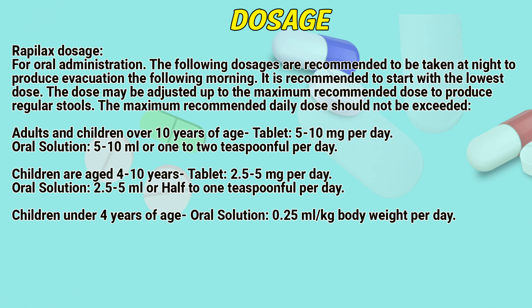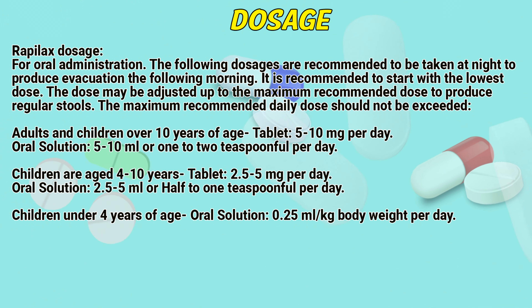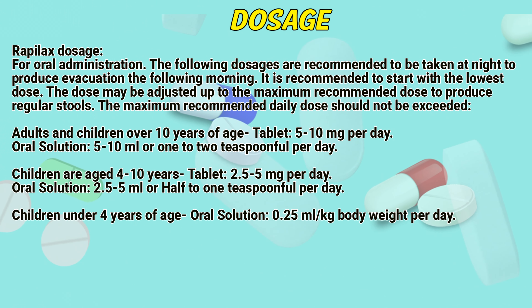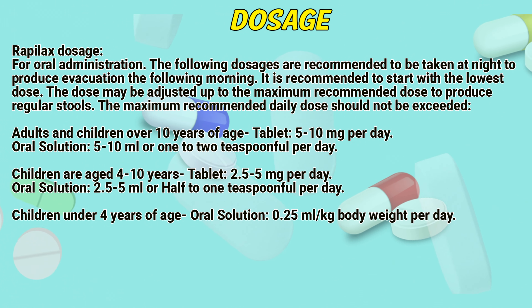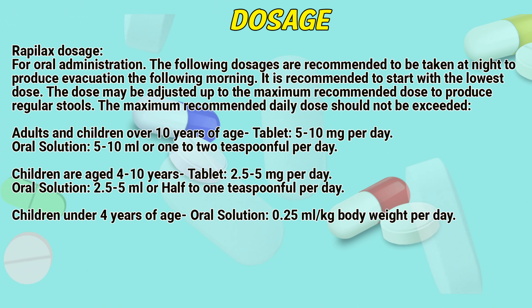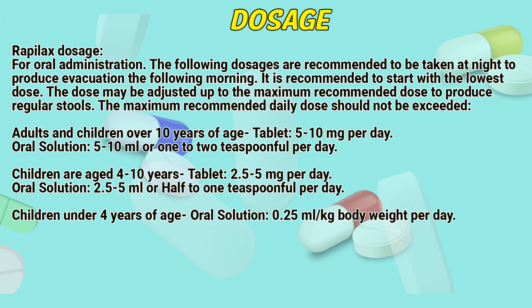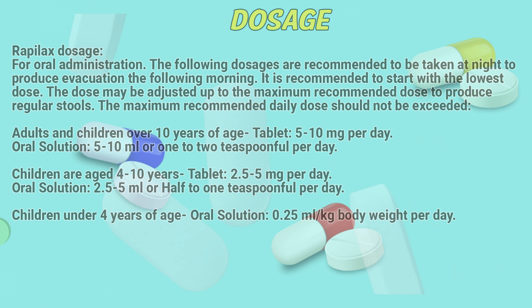Adults and children over 10 years of age: tablet 5–10 mg per day; oral solution 5–10 ml or 1–2 teaspoons per day. Children aged 4–10 years: tablet 2.5–5 mg per day; oral solution 2.5–5 ml or 0.5–1 teaspoon per day. Children under 4 years of age: oral solution 0.25 ml per kg of body weight per day.